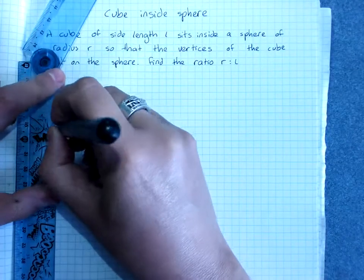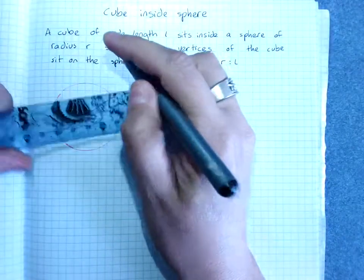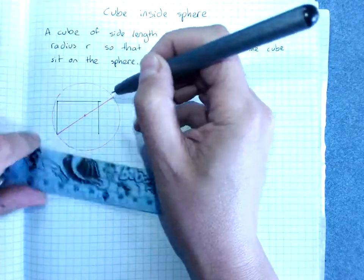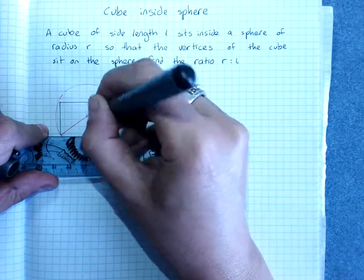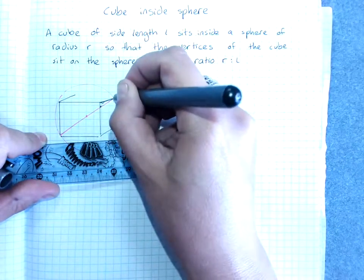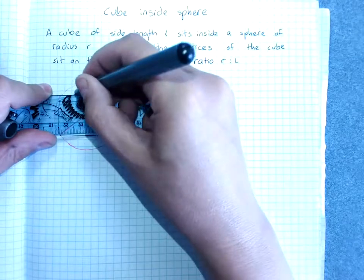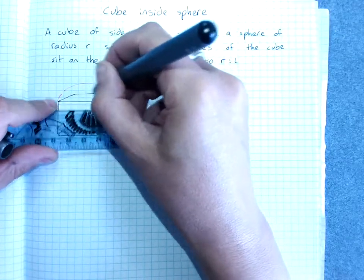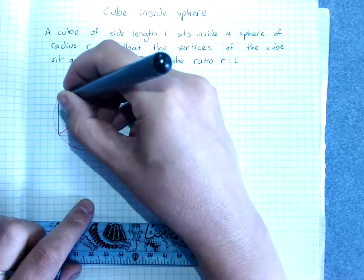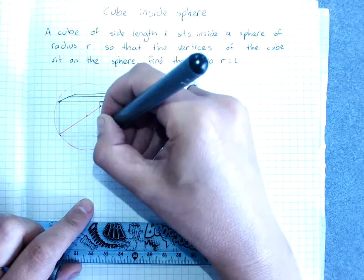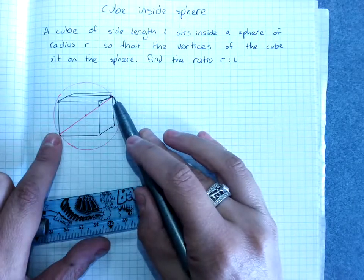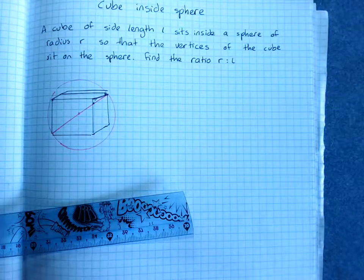So we could then sketch the cube in very badly. So if we've sketched the cube in, its diagonal, bottom left to top right, is the diameter. And that's the thing we need.